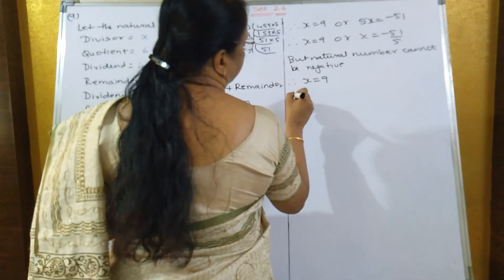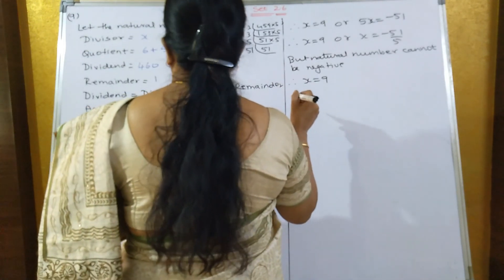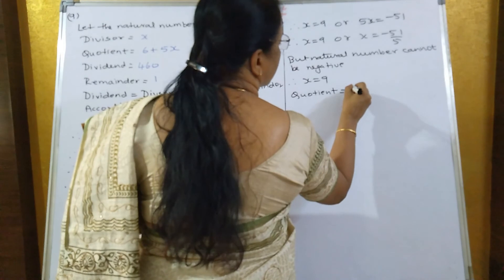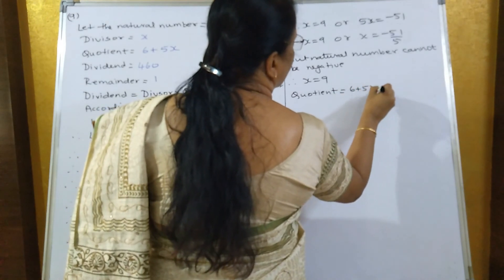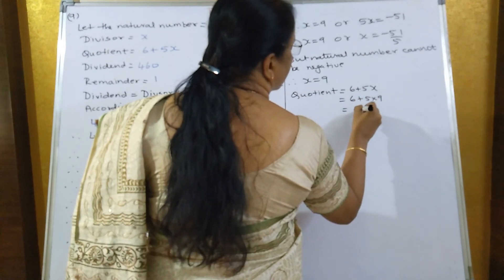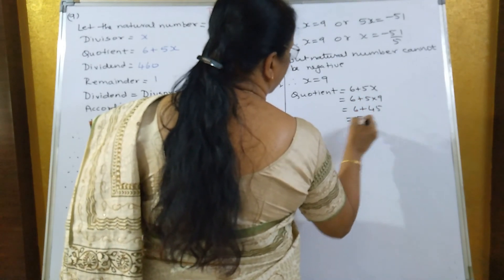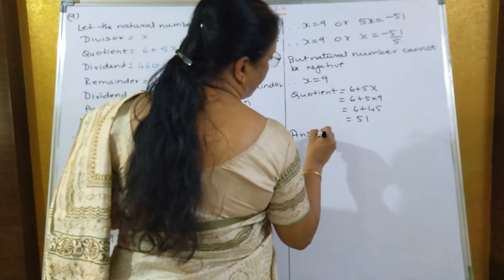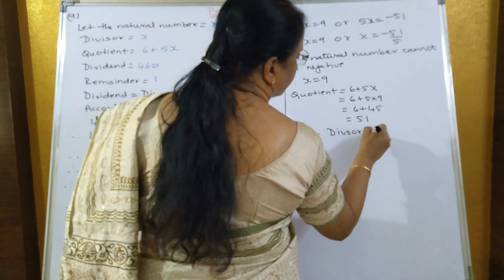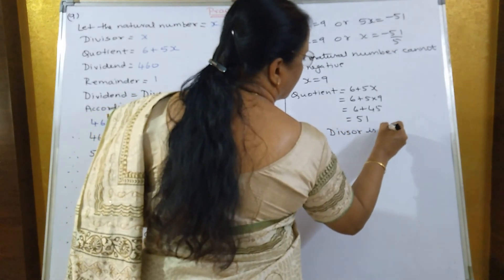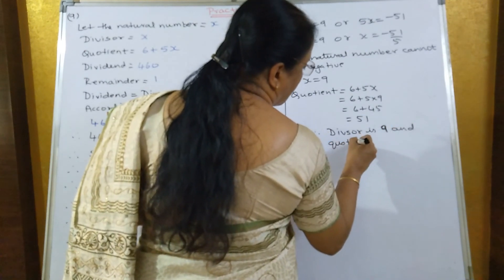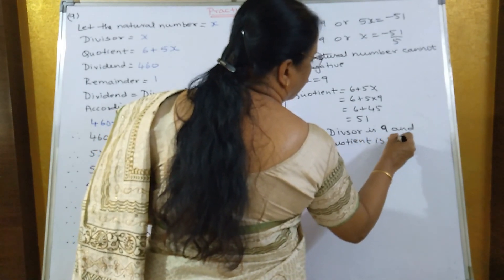So the natural number is what? What is the divisor and quotient? Quotient is equal to 6 plus 5x, that's equal to 6 plus 5 into 9, that's equal to 6 plus 45, that's equal to 51. So what's your answer? Divisor is 9 and quotient is 51.